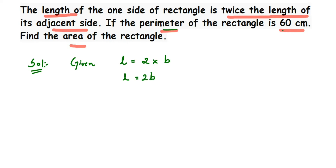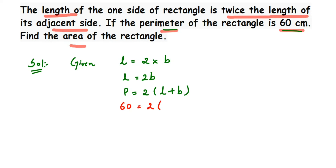They have given the perimeter is equal to 60 centimeters. We know the perimeter formula: P = 2 × (L + B), which is twice of length plus breadth. We are going to substitute the values here. In place of P, I write 60 centimeters.